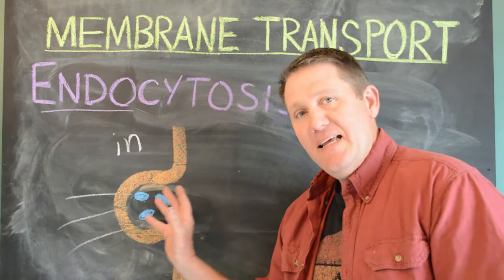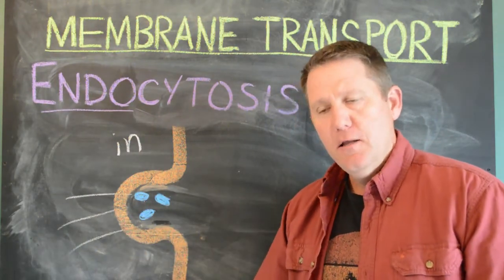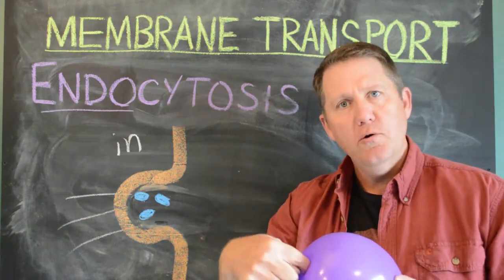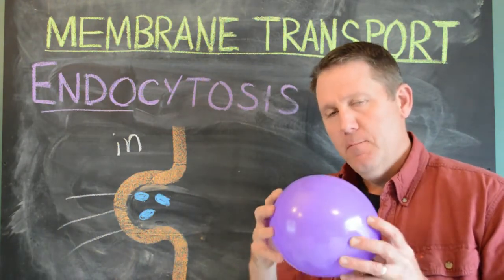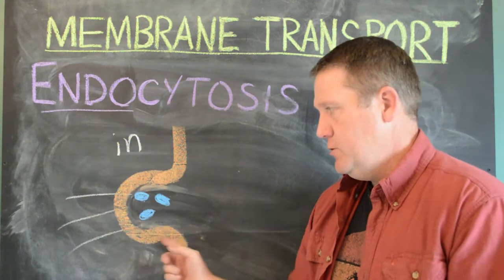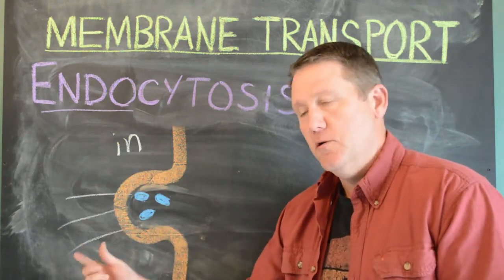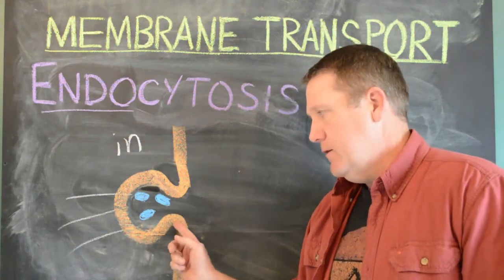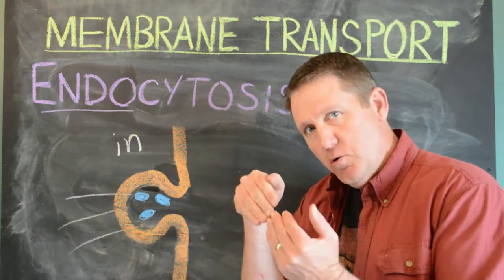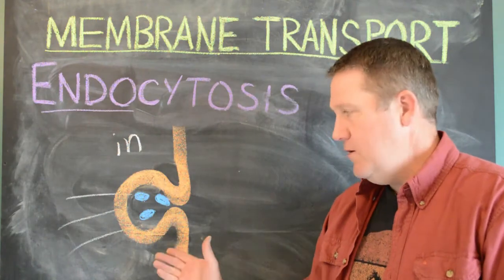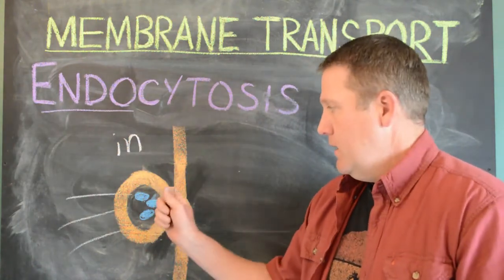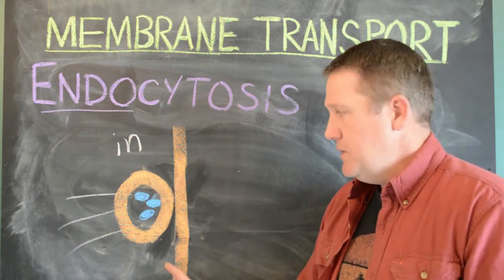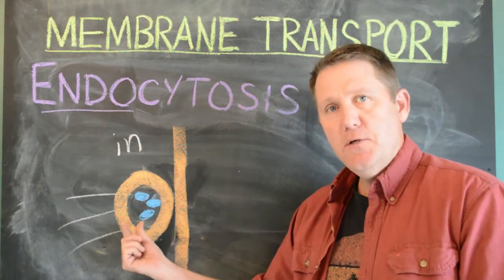The membrane dents in a little further and the objects come in — a bit like denting the outside of a balloon, which can flex in. But unlike a balloon, this is going to pinch off into a vesicle. A pit forms, the edges close the gap, and there we go — the vesicle is completely free of the membrane, which remains intact.